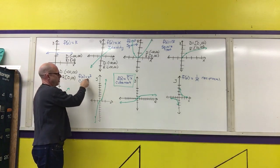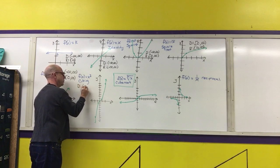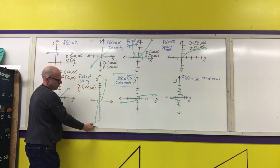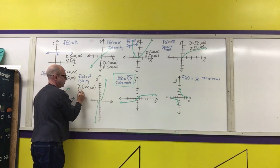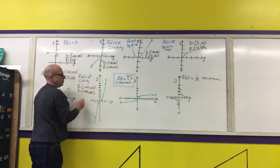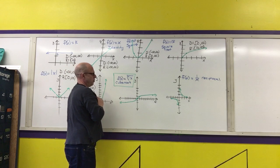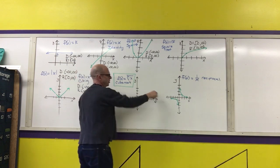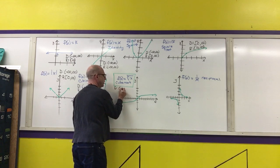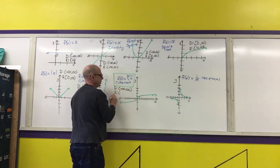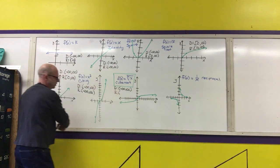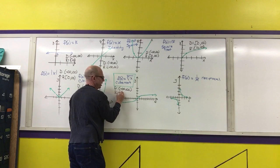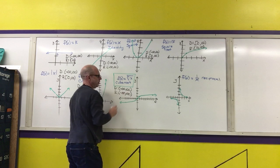For the cubing function, it's a polynomial, so the domain is all real numbers. Its range goes from negative infinity to positive infinity — all real numbers. For the cube root function, even though it is not a polynomial, any real number can be input for x, so its domain is all real numbers. Its range is also all real numbers, negative infinity to infinity, since you can take the cube root of any positive or negative number.